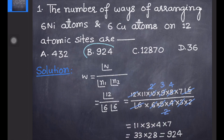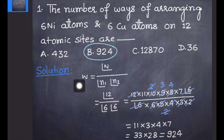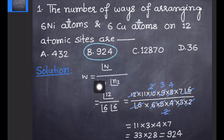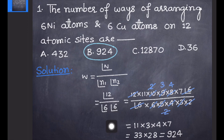The correct answer for this question is option B, that is 924. To summarize: remember the formula that the total number of configurations or arrangements equals factorial of the total number of sites (here 12) divided by the factorials of the number of each type of atom — factorial 6 for nickel and factorial 6 for copper — giving the final answer of 924.